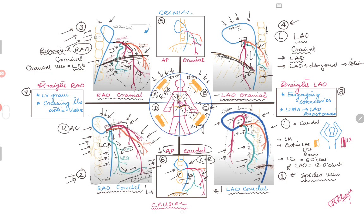This is not a very good view to look at the left main or the proximal portion of the circumflex, ramus intermedius, or the ostium of the LAD. Looking at quadrant D: the x-ray beam is coming from below the patient going up. It crosses the diaphragm first — so you see the diaphragm in the middle — then it enters the heart, and then it comes across the spine, which will be on the right side depending on the patient's body habitus.